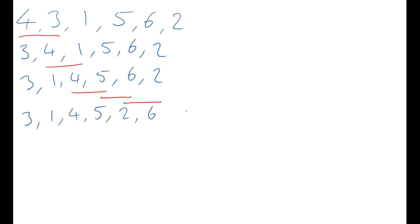At this stage we have completed the first pass. We've gone all the way through and the largest number, the six in this case, has bubbled all the way to the end. In the next stage we're going to ignore that six and we're just going to work with the remaining five numbers and get them into the correct order.